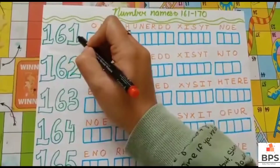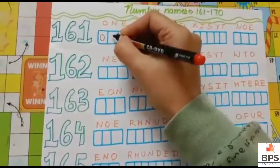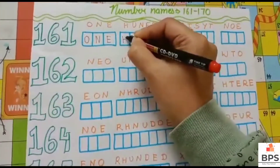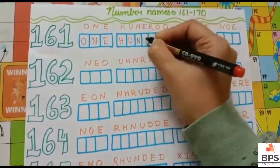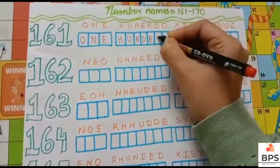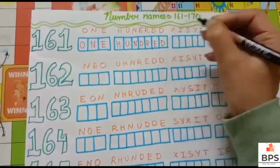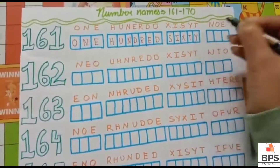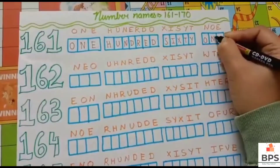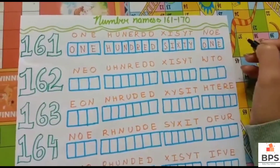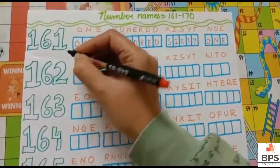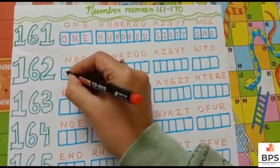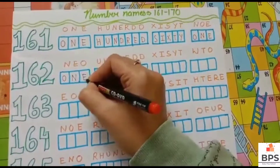One hundred sixty one. 161. O-N-E, one. H-U-N-D-R-E-D, hundred. S-I-X-T-Y, sixty. O-N-E, one. One hundred sixty one.